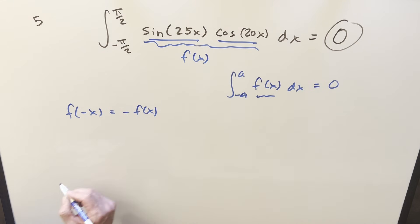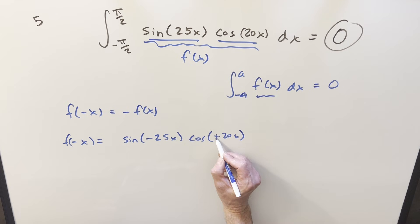If I call this whole thing my f of x, and we'll just plug in minus x to show it. The coefficients don't really matter, but let's just do it anyway. So we plug a minus x in here, we get sine minus 25x times cosine minus 20x. But because cosine is an even function, this minus sign goes away.